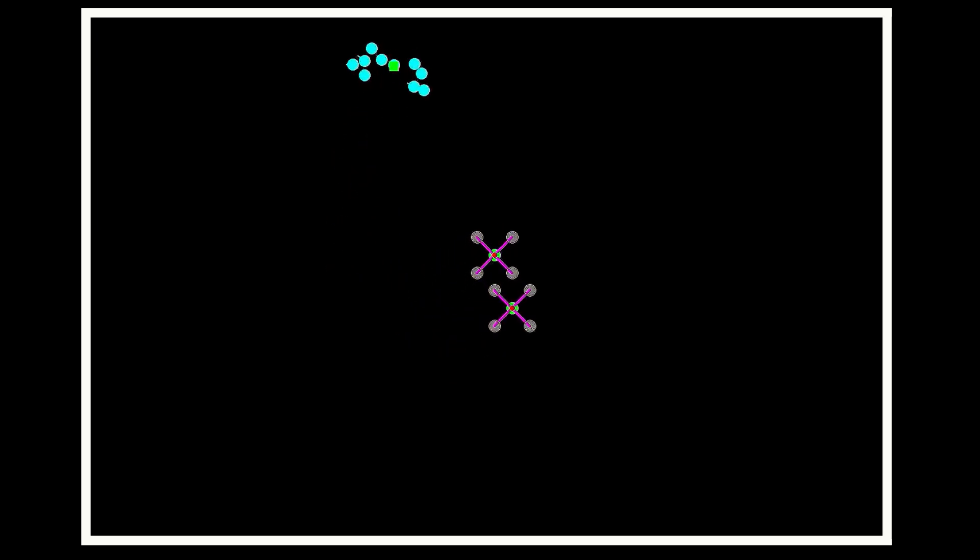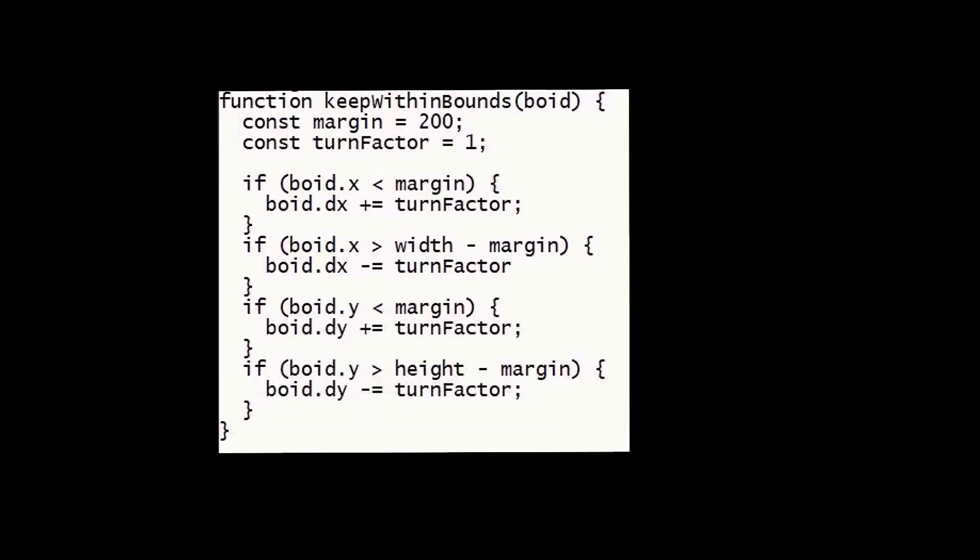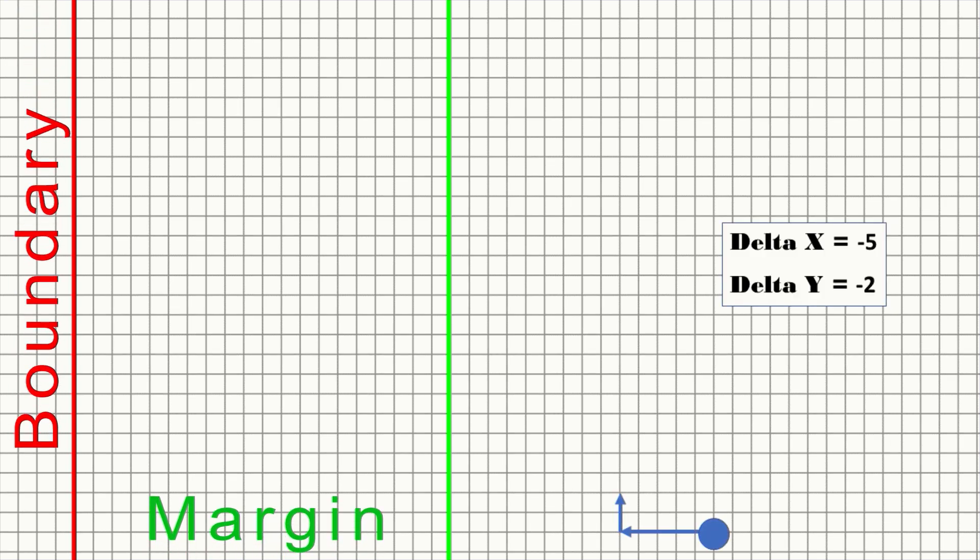So if I want to herd the Boyds, I'm going to need a few other things. First of all, I'm going to need some course boundaries. When the Boyds get close to a wall, a turn factor is introduced to their delta V, which causes them to steer away from it. I now also have a function called avoid boundaries, which strongly urges the Boyds to steer away from the walls.